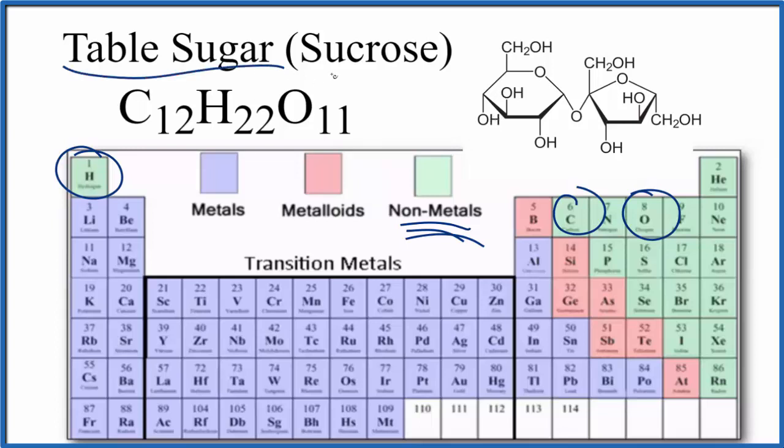So in answer to our question, table sugar, sucrose, is a covalent compound because it's made up of all nonmetals.